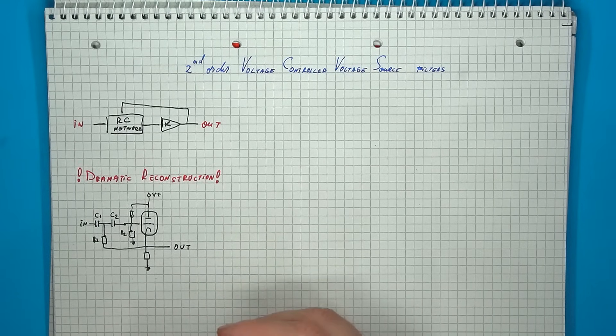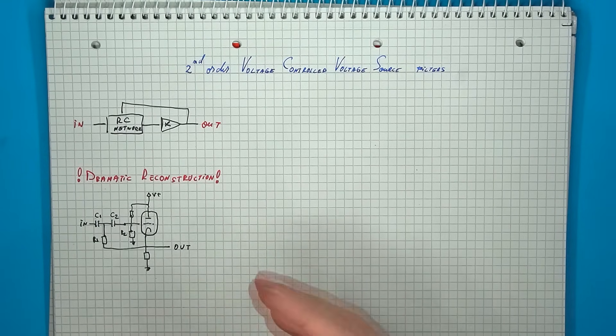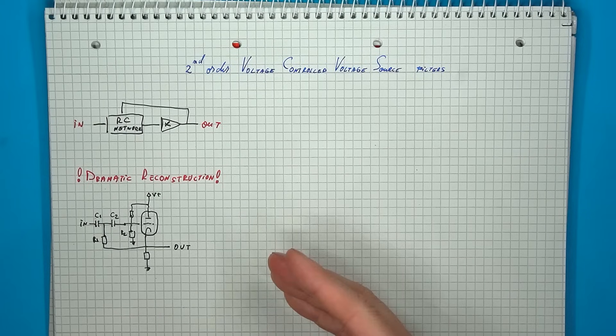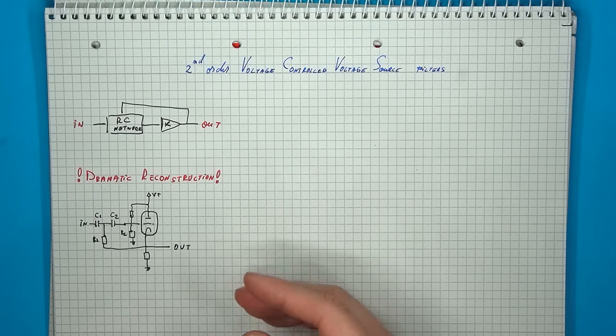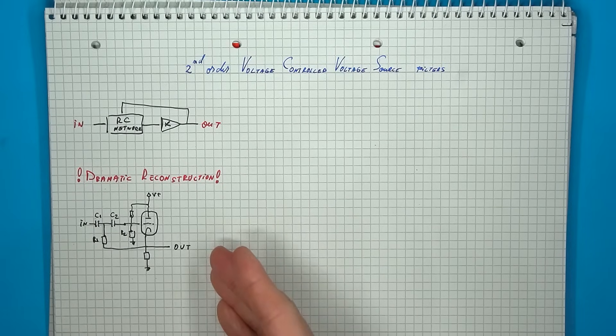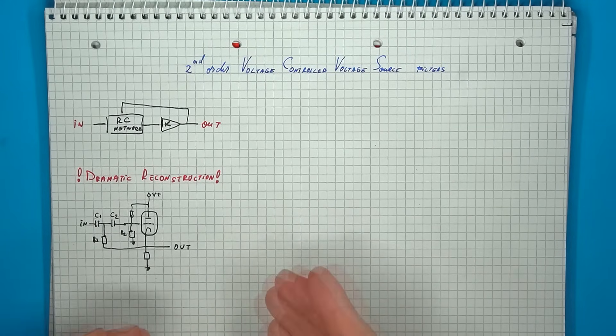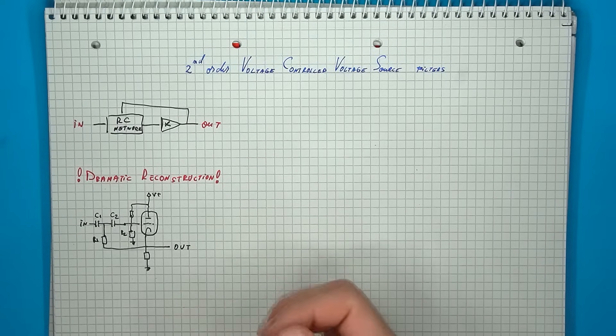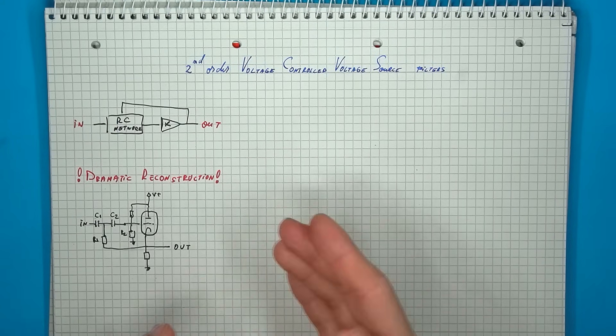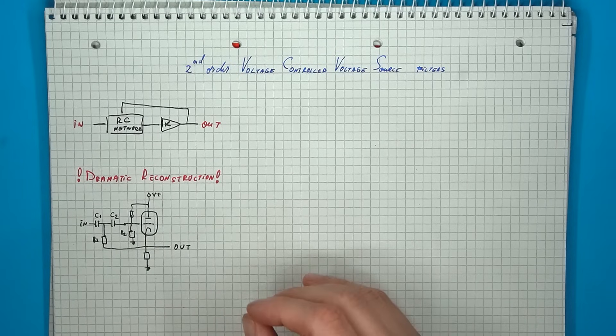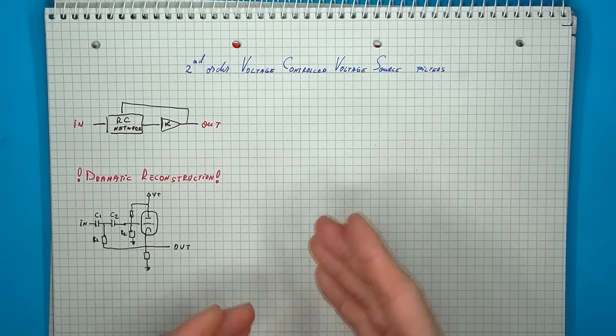The original paper by Sallen and Key used vacuum tubes as amplification elements in the equivalent of the emitter follower configuration, so the amplifier gain that they used was unity. The so-called Sallen Key filter is commonly the one in which the amplifier is configured to have unity gain, but the more general voltage-controlled voltage source filter allows for higher gain values. This, however, is limited depending on the exact topology, since going for too large of a gain value will usually turn the filter into an oscillator.